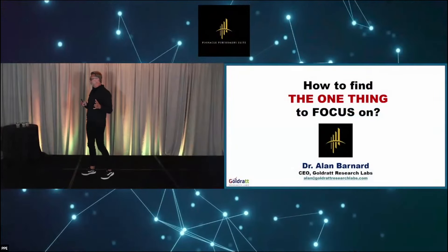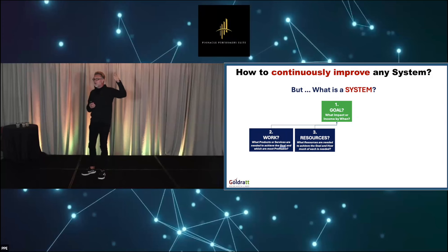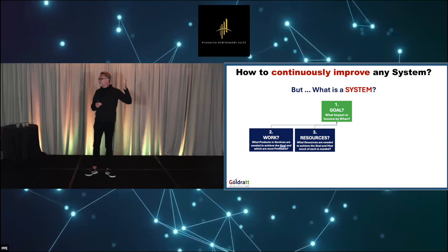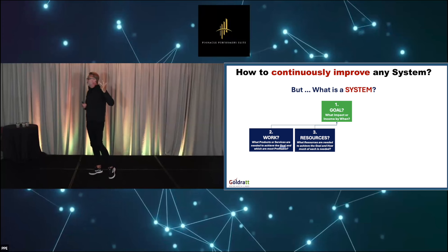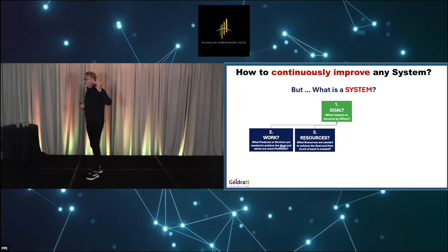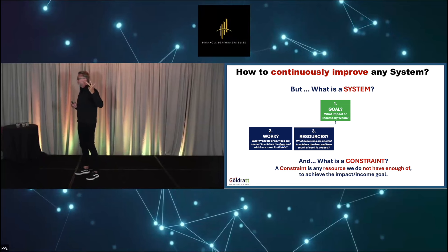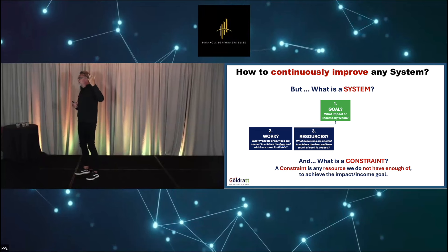Well, firstly you have to define what a system is. A system has five parts. Every system has a goal. In order to achieve the goal you have to do some kind of work — make products or services. In order to do the work you need resources. The goal determines what resources you need and how much of each you need. If you don't have enough of any one of those, it's a constraint. Any resource you don't have enough of is a constraint. You might not have enough demand, capacity, supply, or cash.